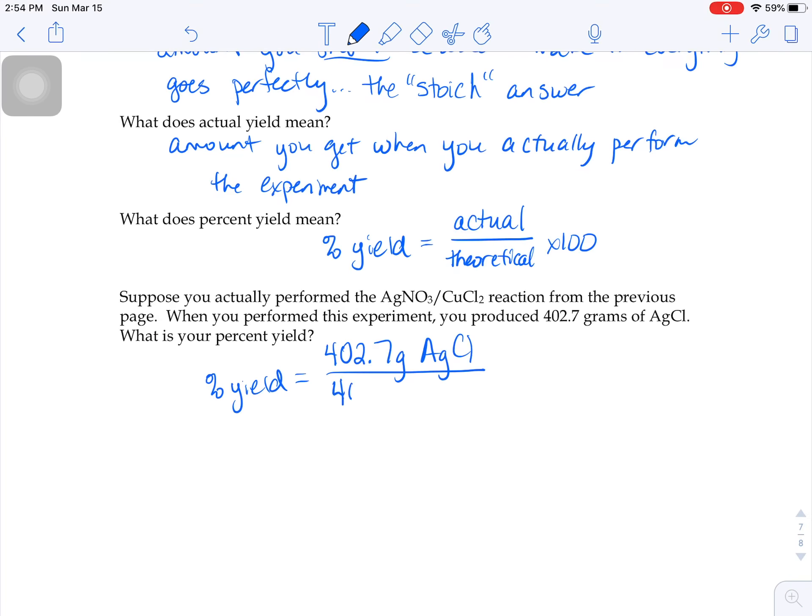So that's the number I'm going to put on the bottom of my fraction here. Multiply it by a hundred to turn it from a decimal to a percent. And we would have gotten 98.36 percent yield. Pretty good.